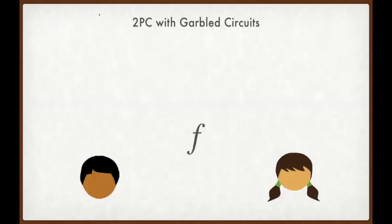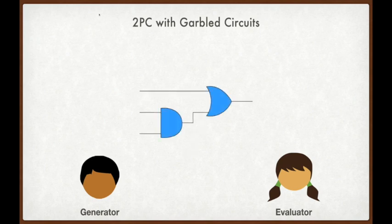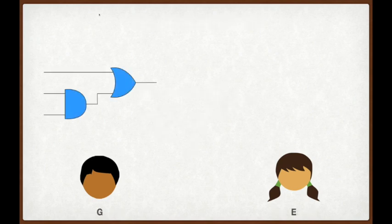Recall that in garbled circuits, we consider two parties: a GC generator and a GC evaluator. The two parties have some function in mind, f, which they would like to securely compute. For garbled circuits, we need the parties to represent the function f as a Boolean circuit. The generator G starts by encrypting the Boolean circuit gate by gate. To do so, he first chooses a pseudorandom seed, which will be the source of his randomness.